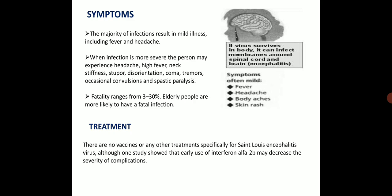Coming to the symptoms: the majority of infections result in mild illness including fever and headache, whereas severe infection — similar to Japanese encephalitis — includes headache, high fever, neck stiffness, stupor, disorientation, coma, tremors, occasional convulsions and paralysis. The fatality ranges from 3 to 30 percent and elderly people are more likely to have fatal infection. There is no vaccine for treating this disease, but use of interferon alpha-2b may decrease the severity of the complications.